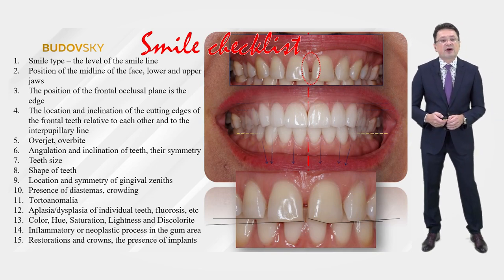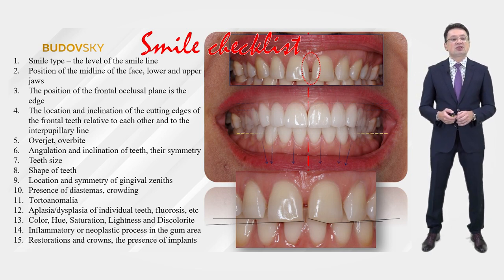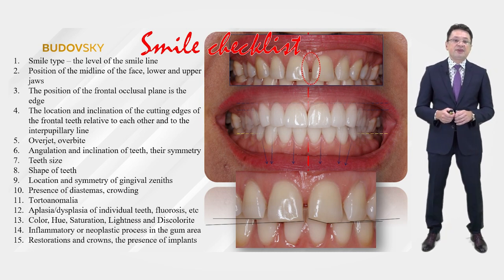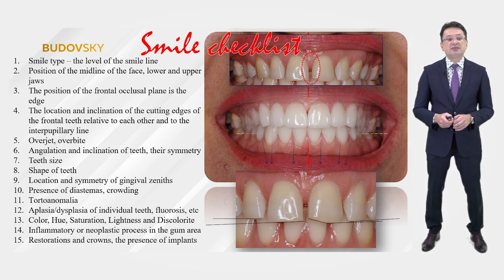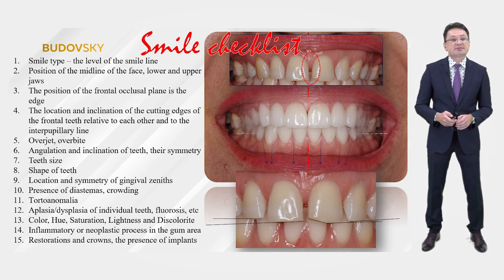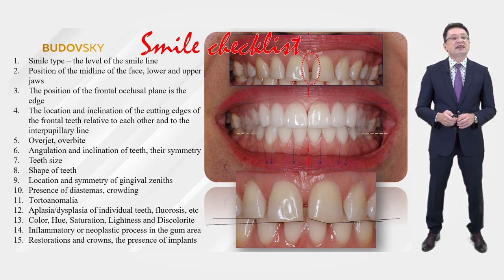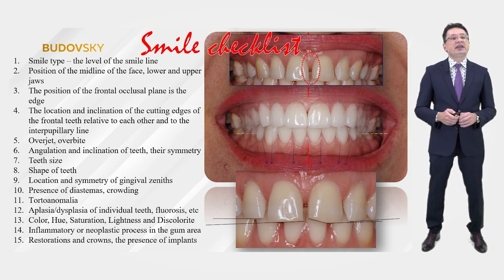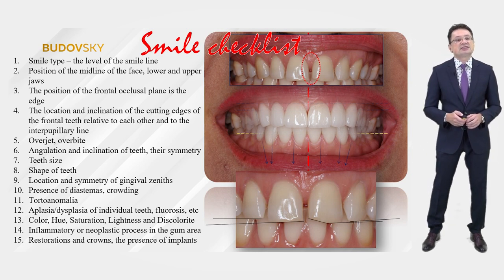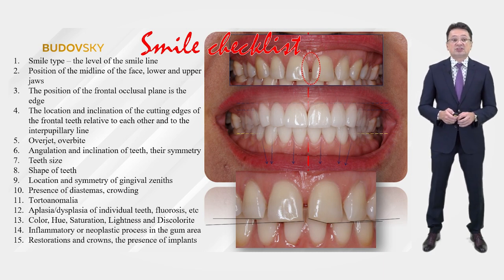Let's summarize our work and make a checklist that will not allow you to make mistakes when working with veneers and aesthetics. You will just need to follow it and fill out the appropriate list — if you write to me, my assistants will send you an extended checklist in PDF. We have to consider: smile type, level of smile line, position of the midline of the face, lower and upper jaw, the position of the frontal occlusal plane, the location and inclination of the cutting edges of the frontal teeth relative to each other and to the interpupillary line, overjet, overbite, angulation and inclination of teeth, and their symmetry.